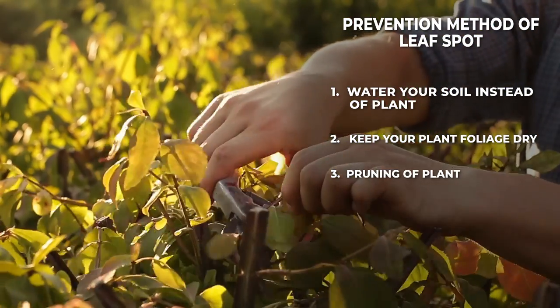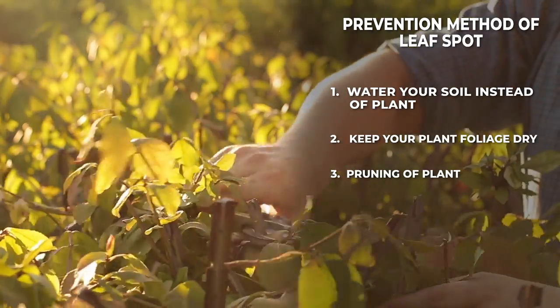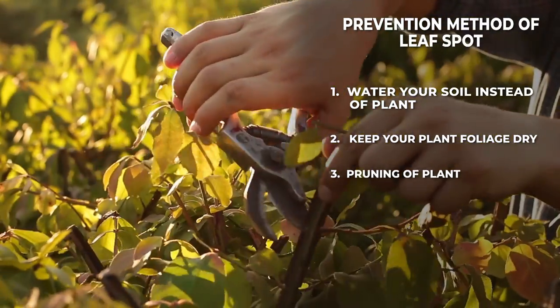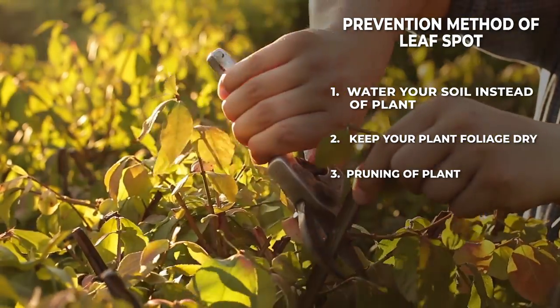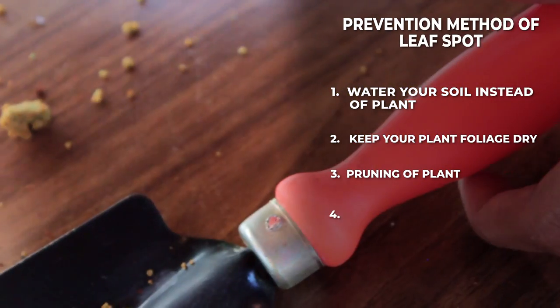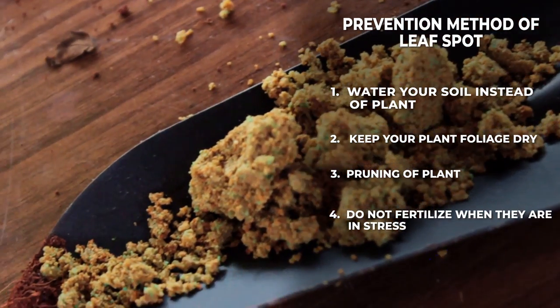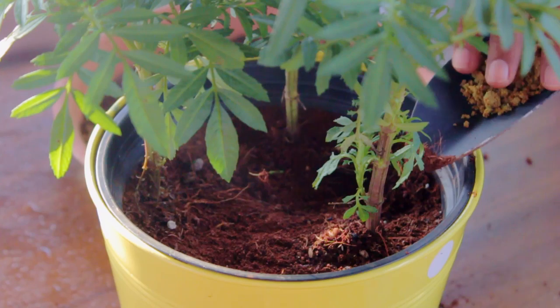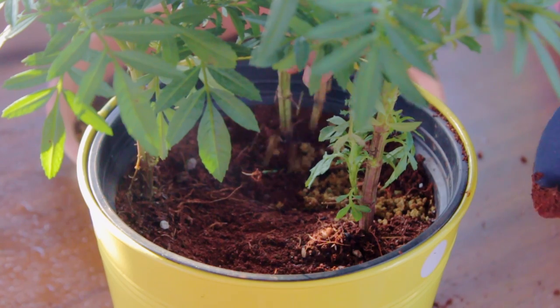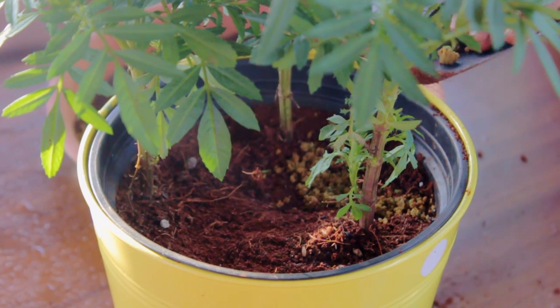If your plant's canopy or leaves are very thick and block light penetration, then you have to reduce the load on your plants by cutting extra or unproductive branches to allow light penetration. Do not fertilize your plants when they are under stress, especially with chemical fertilizers, because when you apply chemical fertilizers to a stressed plant, it behaves like a toxin for it.